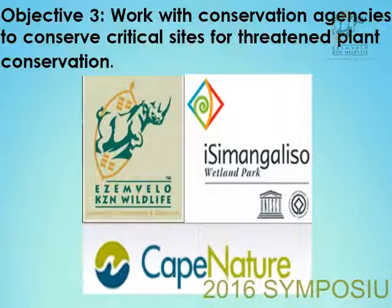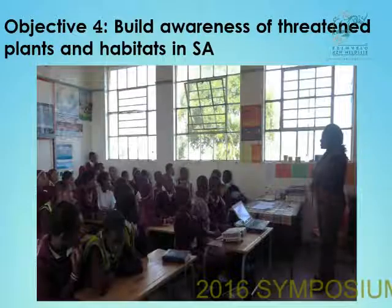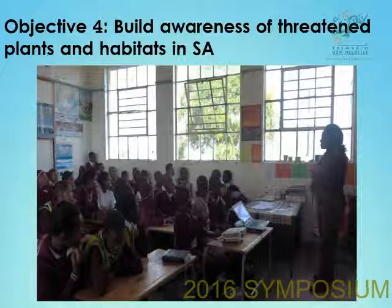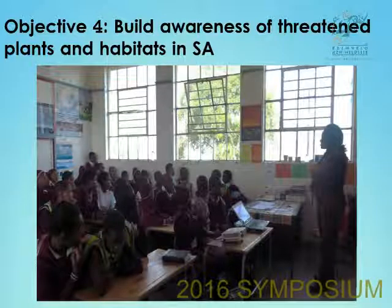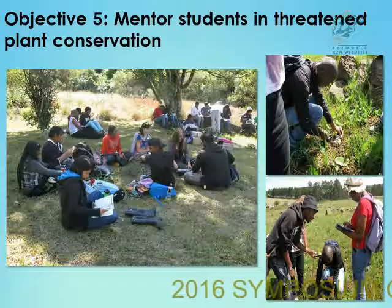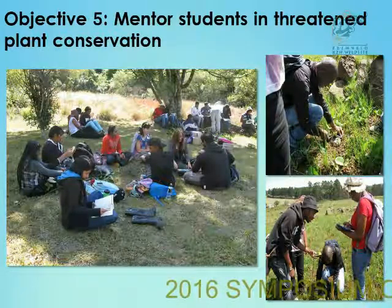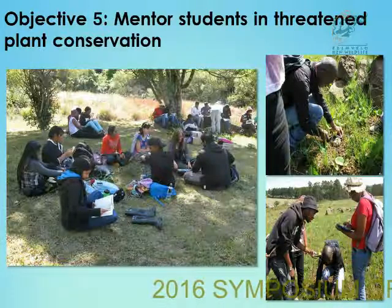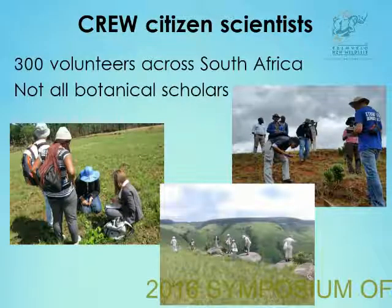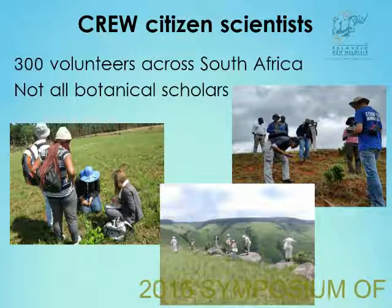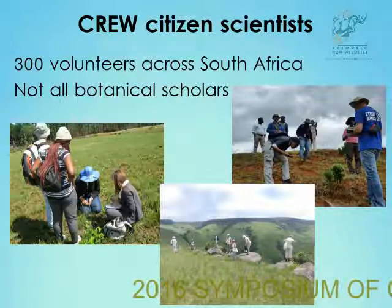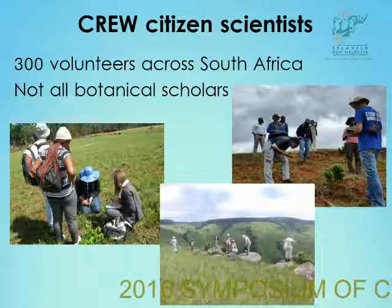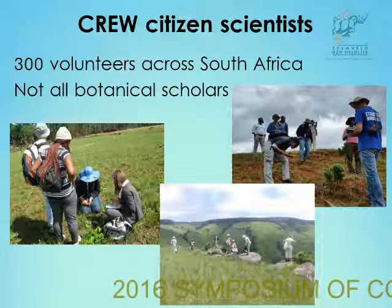We build awareness with different schools on threatened plant conservation and protected areas in South Africa. And objective five, we mentor students at universities on threatened plant conservation. The CRU program has a dedicated group of citizen scientists. Across South Africa, we have about 300 volunteers, and not all of them are botanical scholars. Many of them are just average folk who are interested in plants, and they join CRU for the experience, and then end up just loving it and staying with the program.